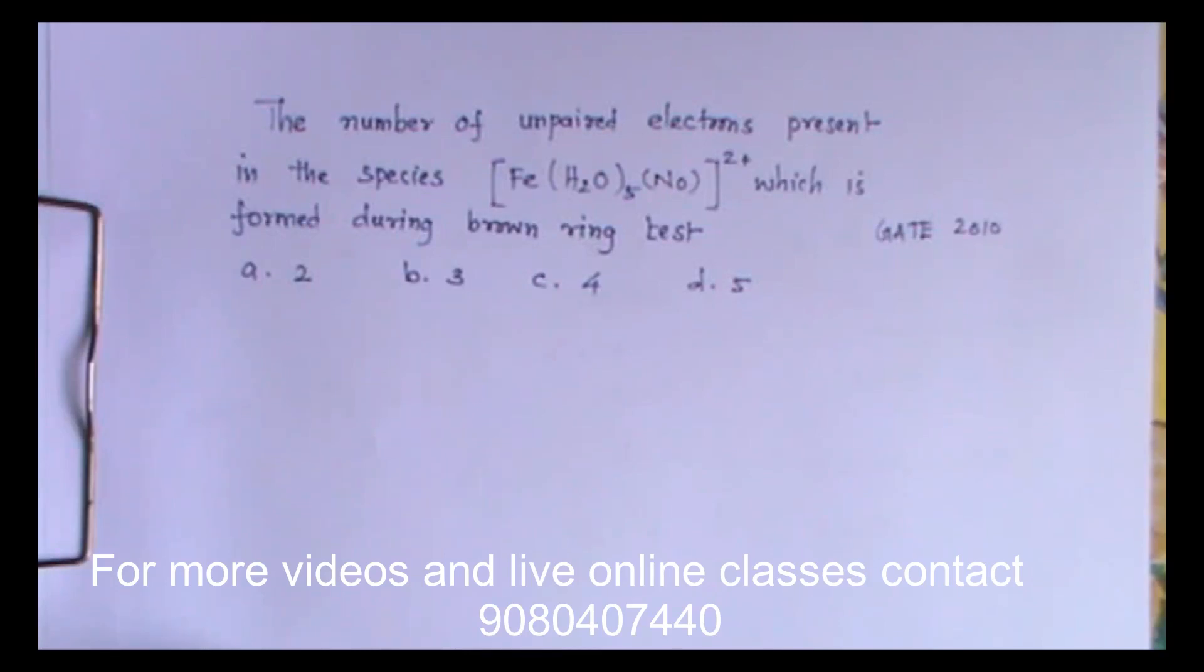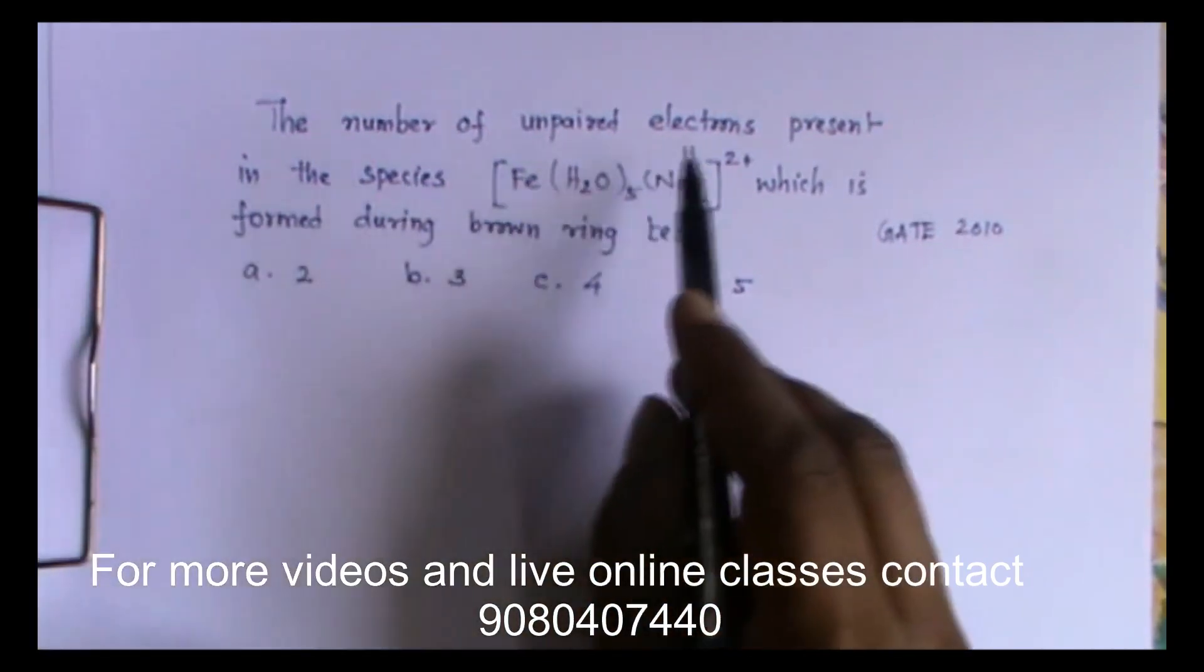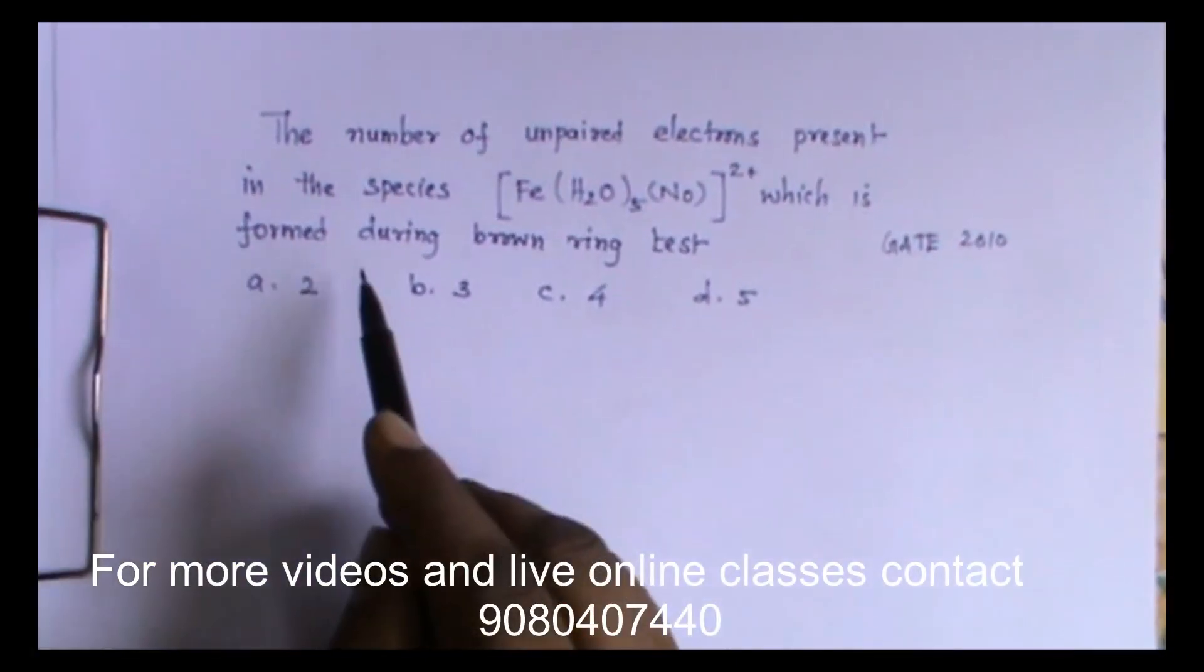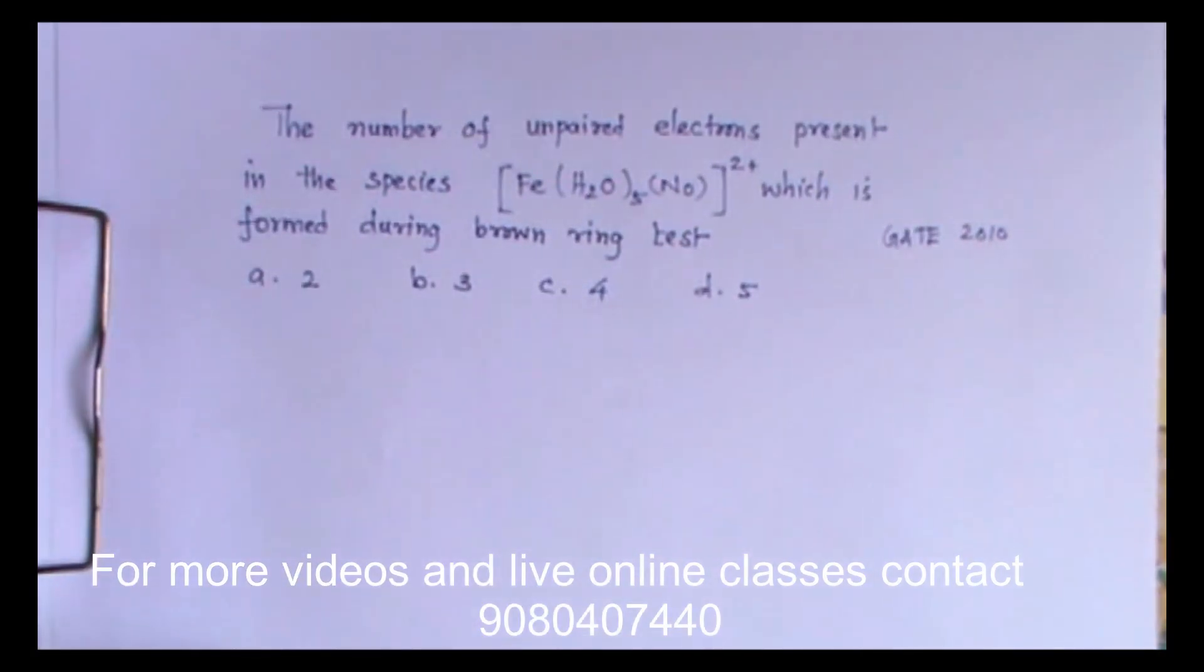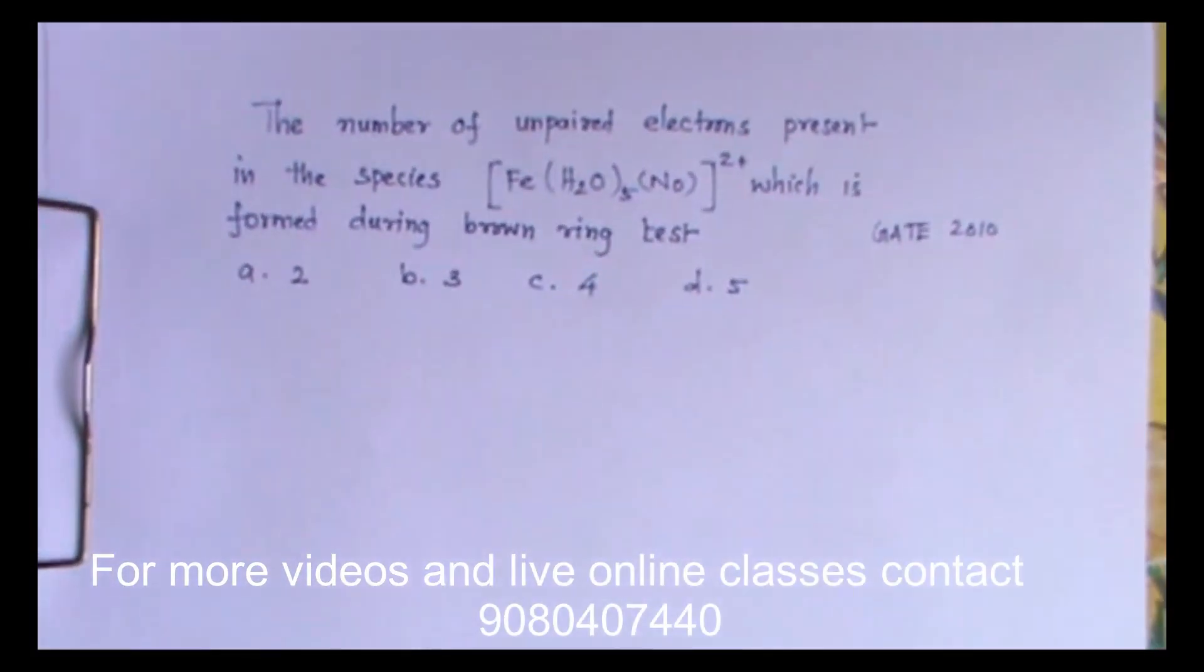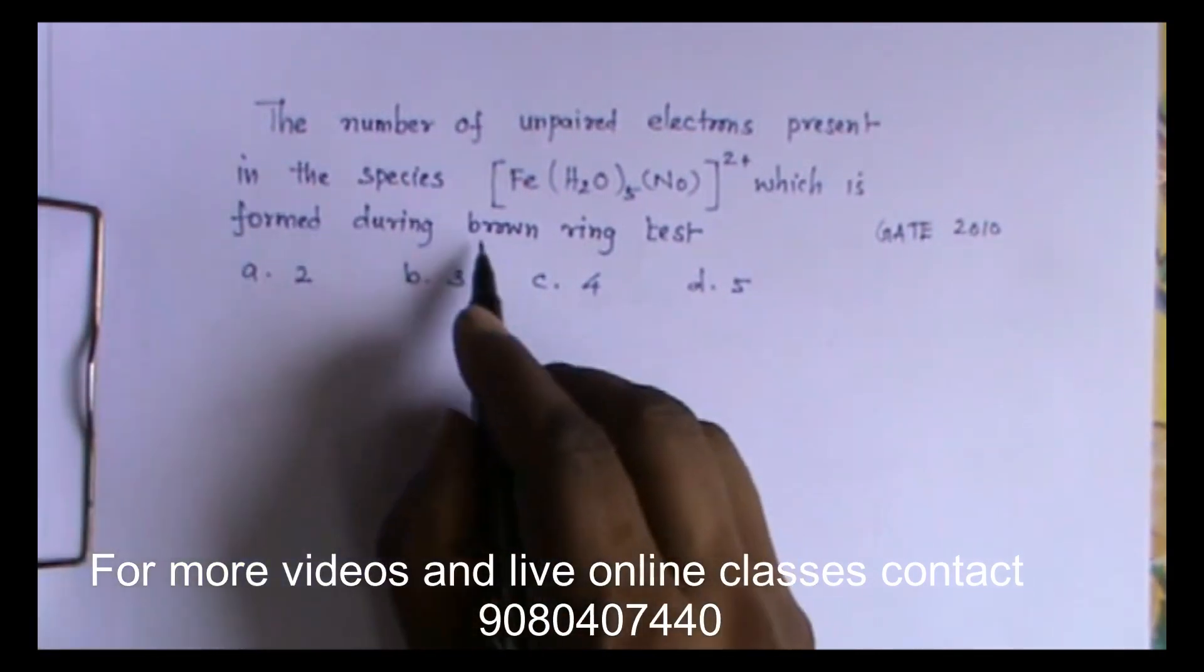In this video we are going to solve a tricky problem, though it is very simple. Generally students make mistakes in this particular question. The number of unpaired electrons present in the species formed during brown ring test was asked in GATE exam 2010. Brown ring test is used to find out nitrates.